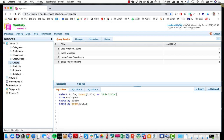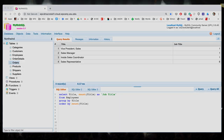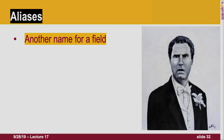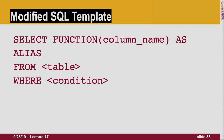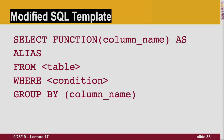For a COUNT of title, I can label the output using an alias — for example, calling it 'job title' instead of 'count title.' An alias is simply a name for another field, just like in real life. In our template: SELECT column name AS alias FROM table, WHERE a condition exists — like where a function starts with A — GROUP BY if doing a count, and ORDER BY if desired.